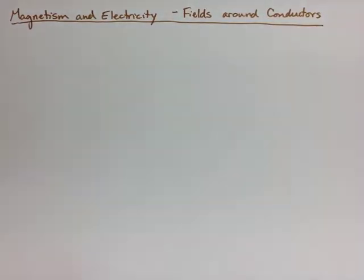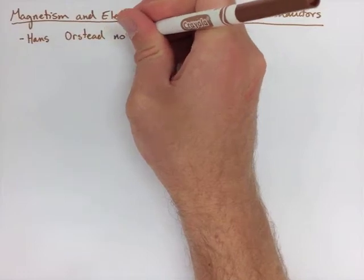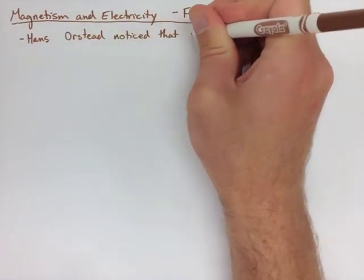Hans Oersted noticed that there was a strange effect on a magnet compass when a current was placed through a wire that was near that compass.